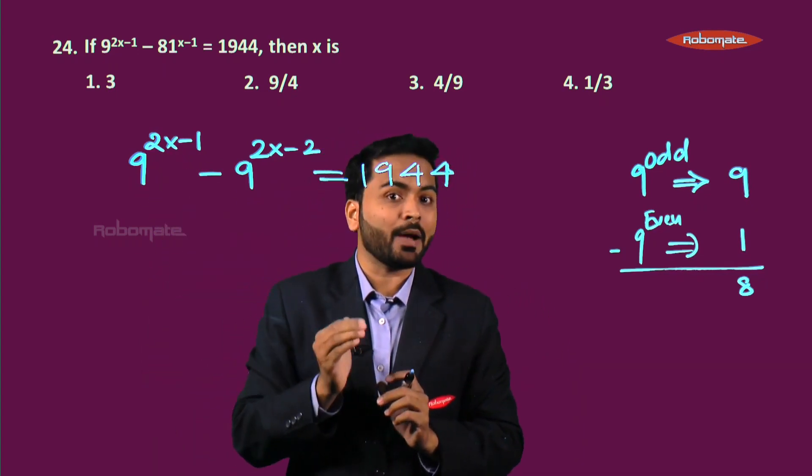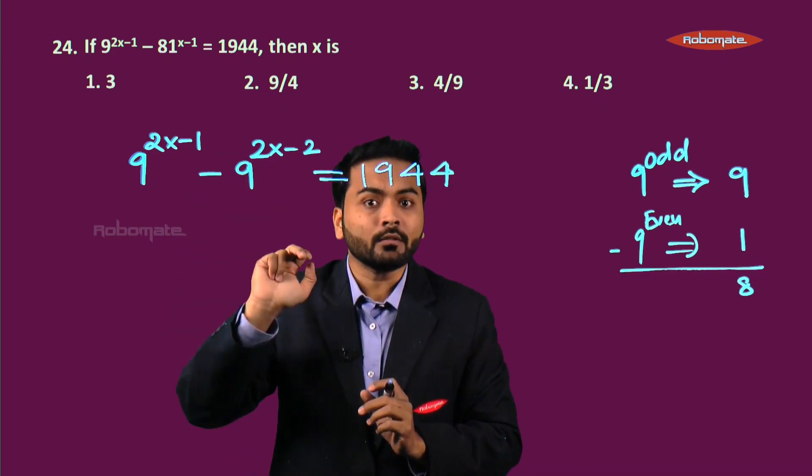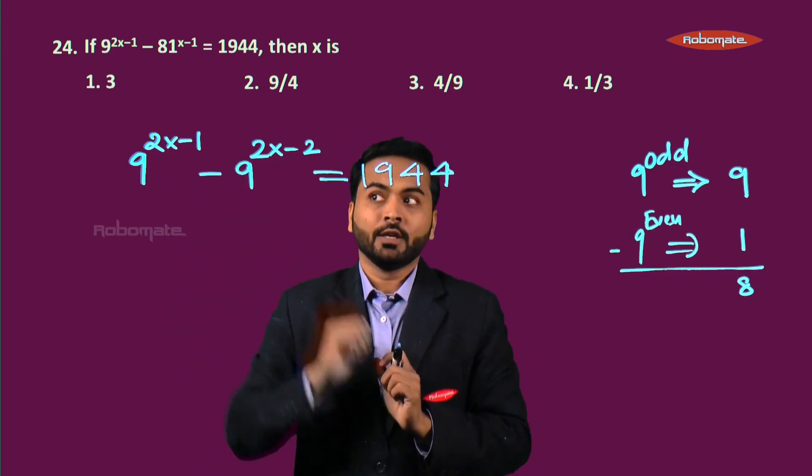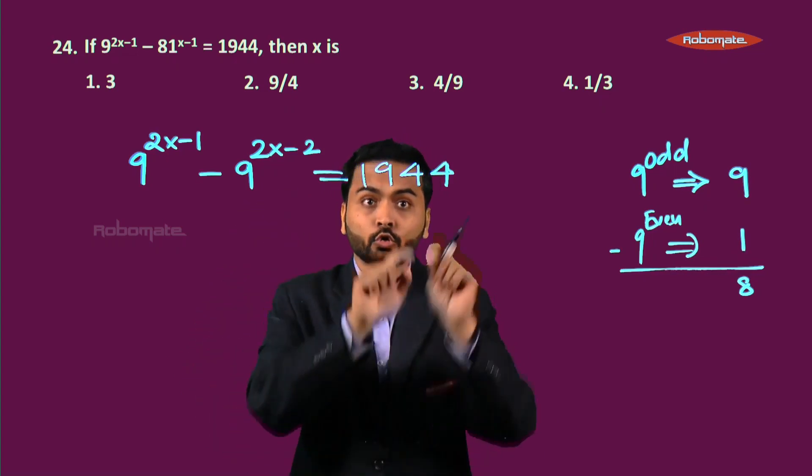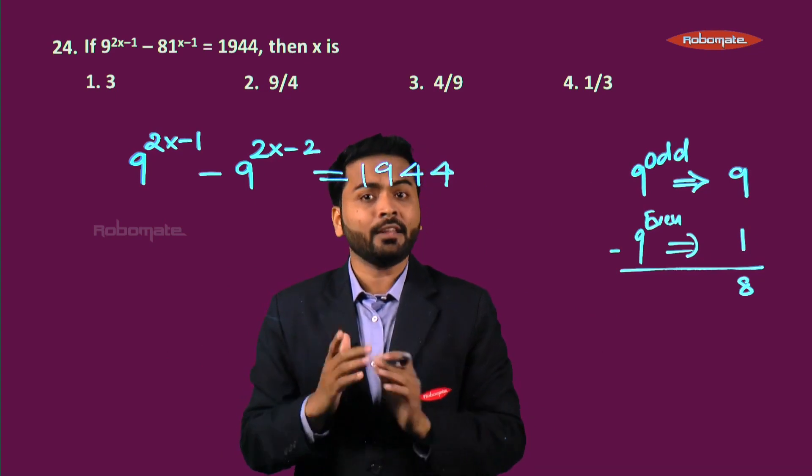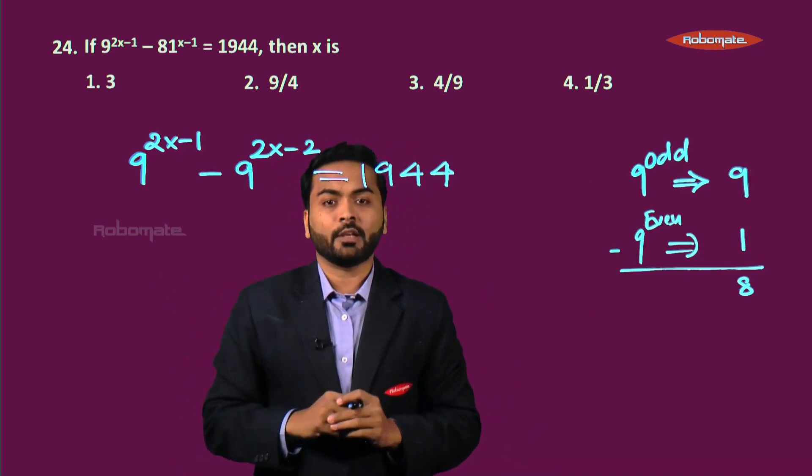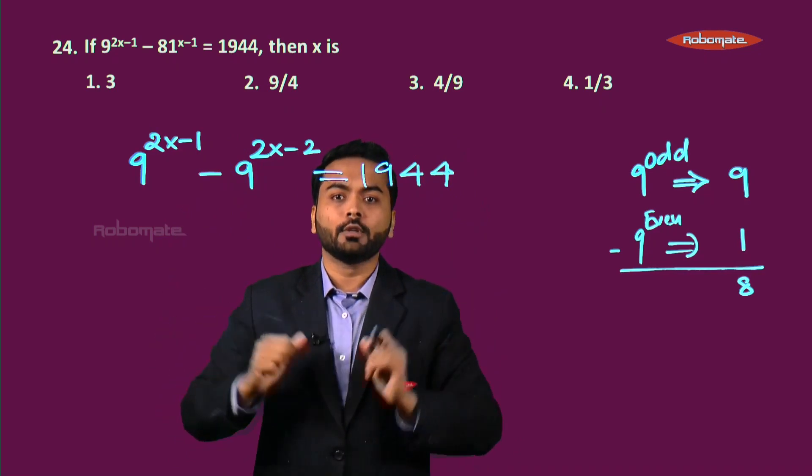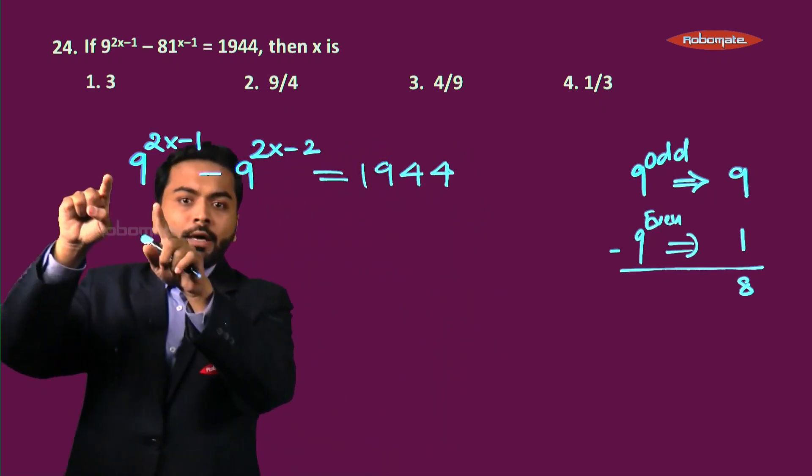Similarly in this case also, we will not get an integral number, a bigger number, right? And hence it has to be 9 by 4. Now let's see how we could have actually solved this question.